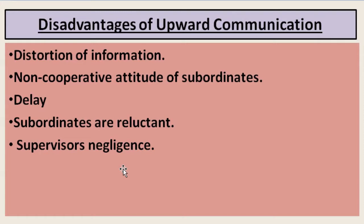The next disadvantage is the non-cooperative attitude of subordinates. The major reason that upward communication fails is also because of the non-cooperative attitudes of subordinates. Here, subordinates become very obstinate in nature — they become obstinate as well as hesitant. It depends on the atmosphere of the organization, and this also affects the upward channels of communication.